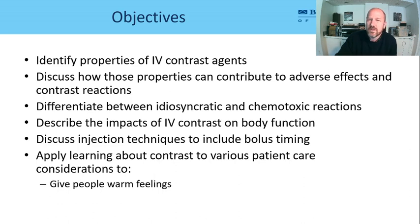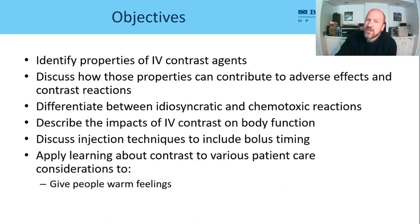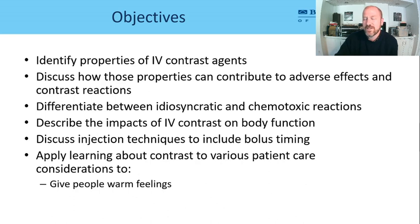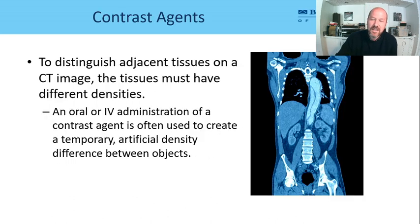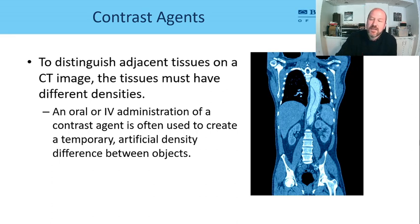We'll talk about injection and briefly about oral contrast like barium. We'll also cover how to apply this understanding to giving people warm, weird feelings — because that's what you told your kindergarten teacher you wanted to do when you grew up. Contrast agents help us distinguish between adjacent tissues on the CT scan — we can give them IV or orally — and that's how we're able to see this aortic dissection on this image here.